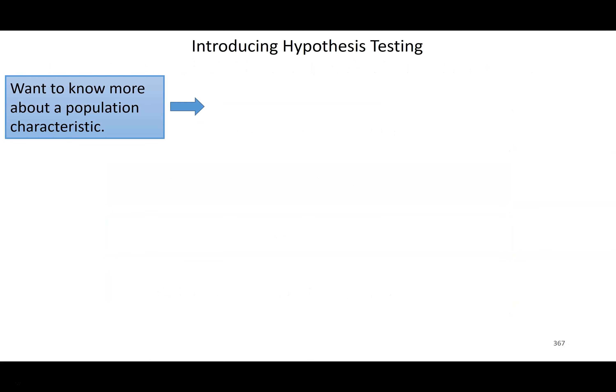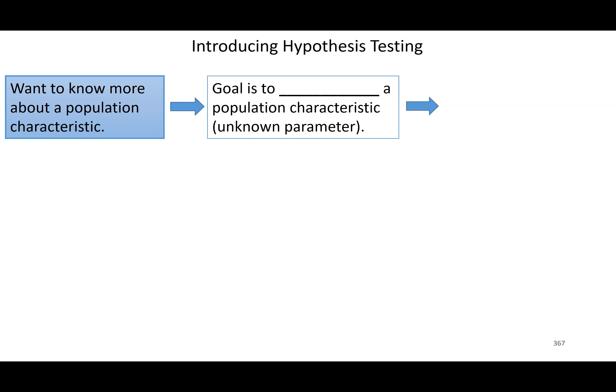Last week when we went through estimation problems and calculated confidence intervals, we wanted to know more about a population characteristic. So maybe I want to know what the average number of hours students spend studying in a week is — all OSU students. These tend to have questions of interest that are open-ended, like 'what is' or 'researchers want to estimate blank.' That kind of wording indicates we want to calculate a confidence interval.